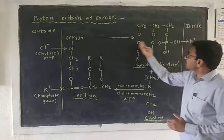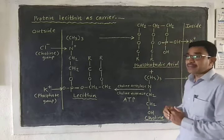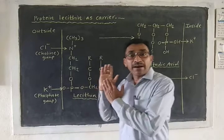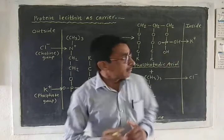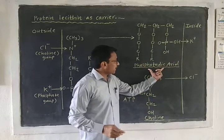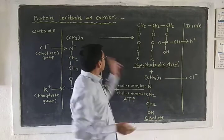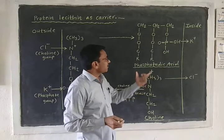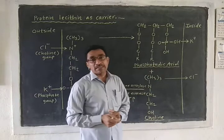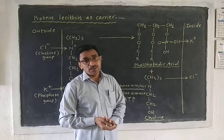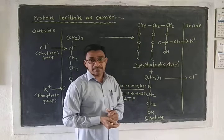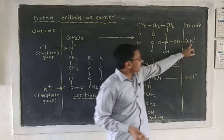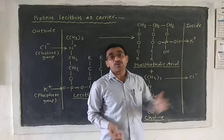The lecithin moves to the inner surface of the cell. At the inner surface, it dissociates. Lecithin is dissociated at the inner surface of the cell, and the separation of phosphatidic acid and choline occurs. During the dissociation of lecithin, the phosphatidic acid and choline are separated.